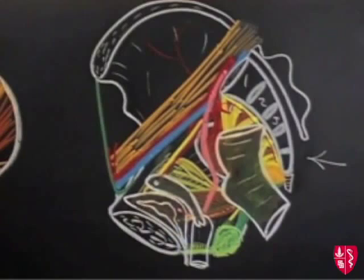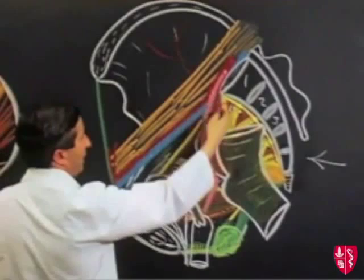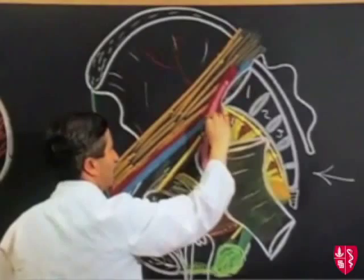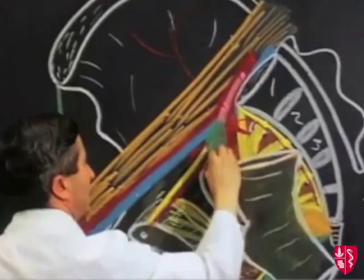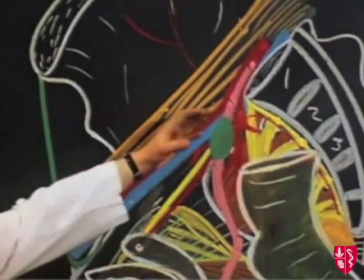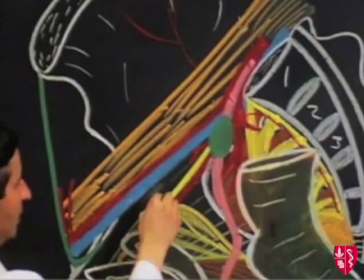Having put in the ureter, we can put in an important structure lying in the angle between the external iliac artery and the internal iliac artery, with the ureter lateral to it — that is the ovary. The ovary is an ovoid body resting in this depression between the iliac vessels. Coming up from the uterus to the region of the ovary we have the uterine tube with its fimbriated open end.